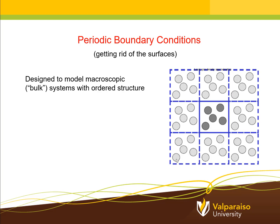In periodic boundary conditions, we take the system that we're going to study — you can see in the center square here, that's composed of these five atoms — and it makes a copy of that system in all directions in space. This fundamental square in two dimensions (or a cube in three dimensions) is repeated over and over again. We call that a periodic system, and it's designed to be a good description of bulk, macroscopic systems that have a repeated, ordered structure that goes on and on in space. Periodic boundary conditions also get rid of the surfaces, which are actually pretty difficult to treat using quantum mechanics.